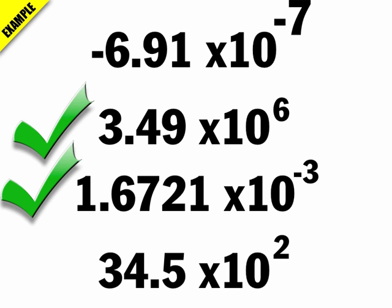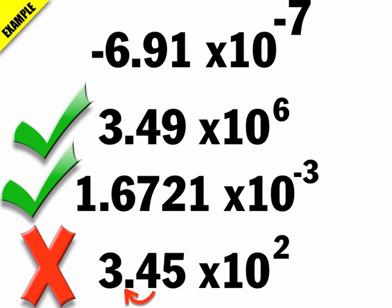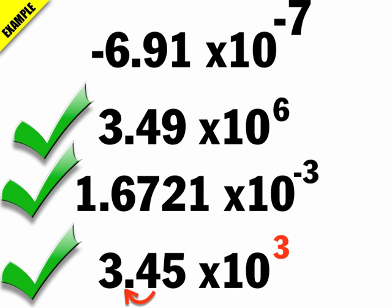Here's another number, but it's not in scientific notation — this is exponential notation, and I need to put it in scientific notation. So I'll move the decimal over, and as I move the decimal over, that's going to change the power of 10. Now it's in scientific notation because I have one number to the left of the decimal.